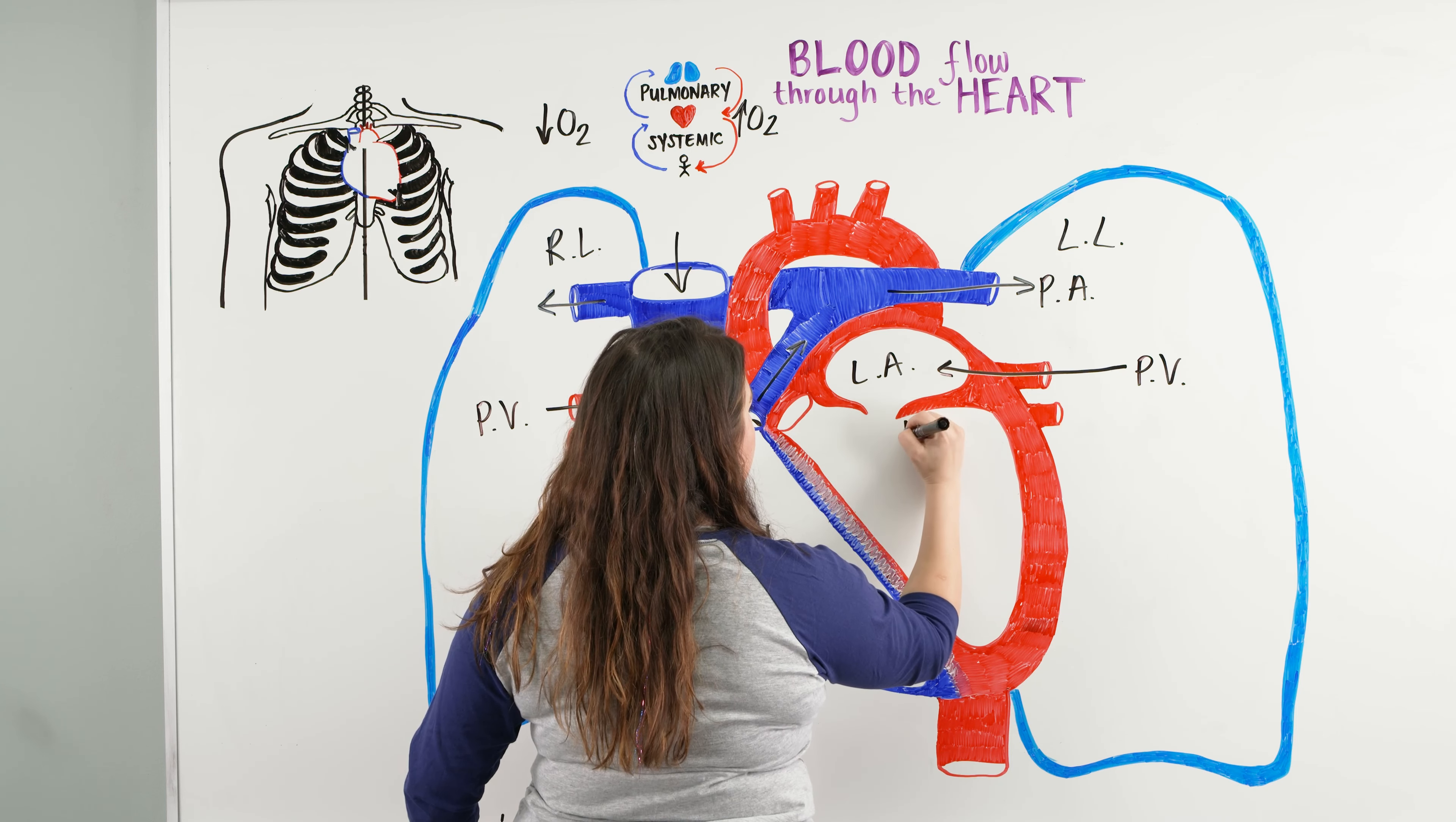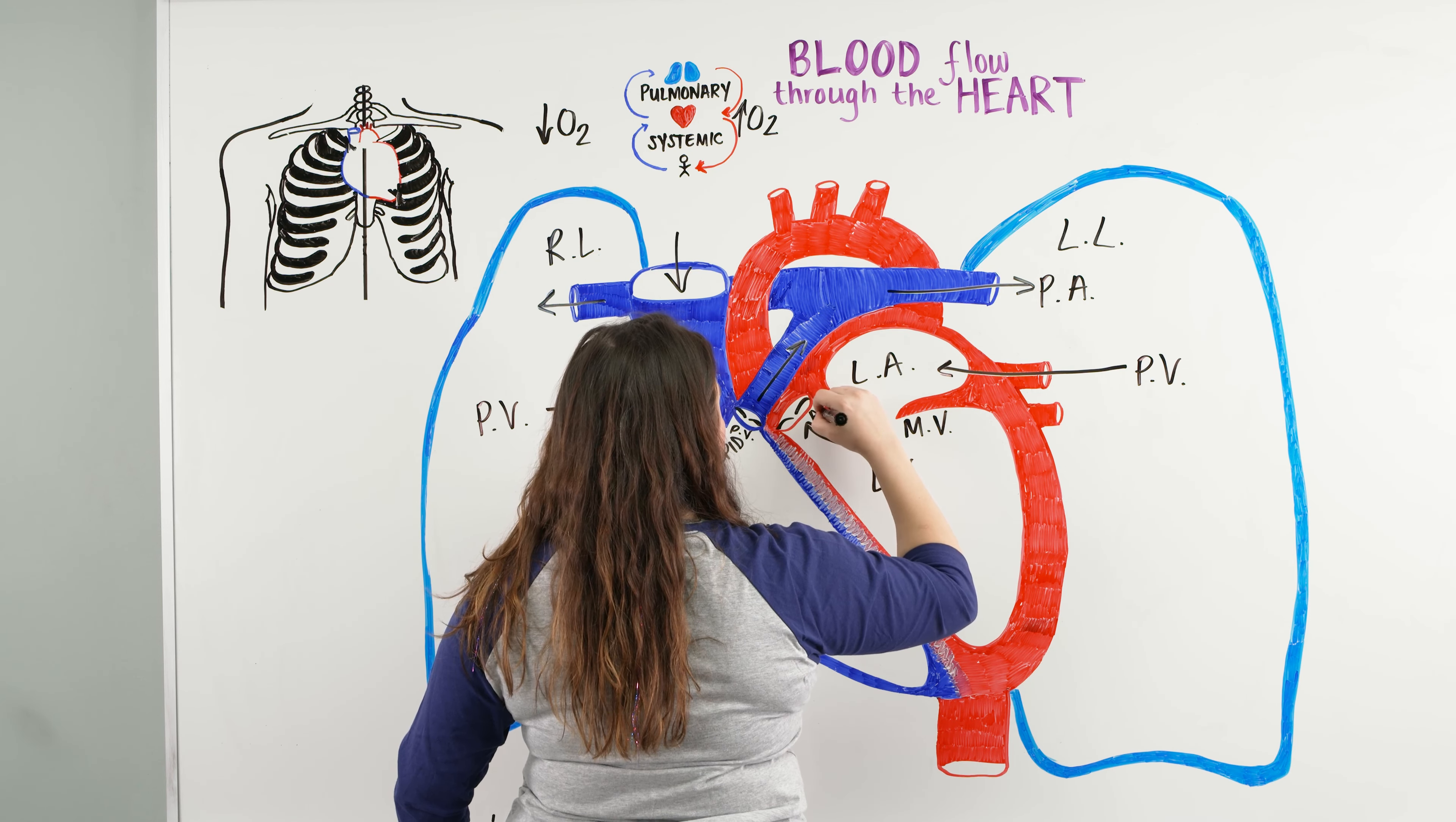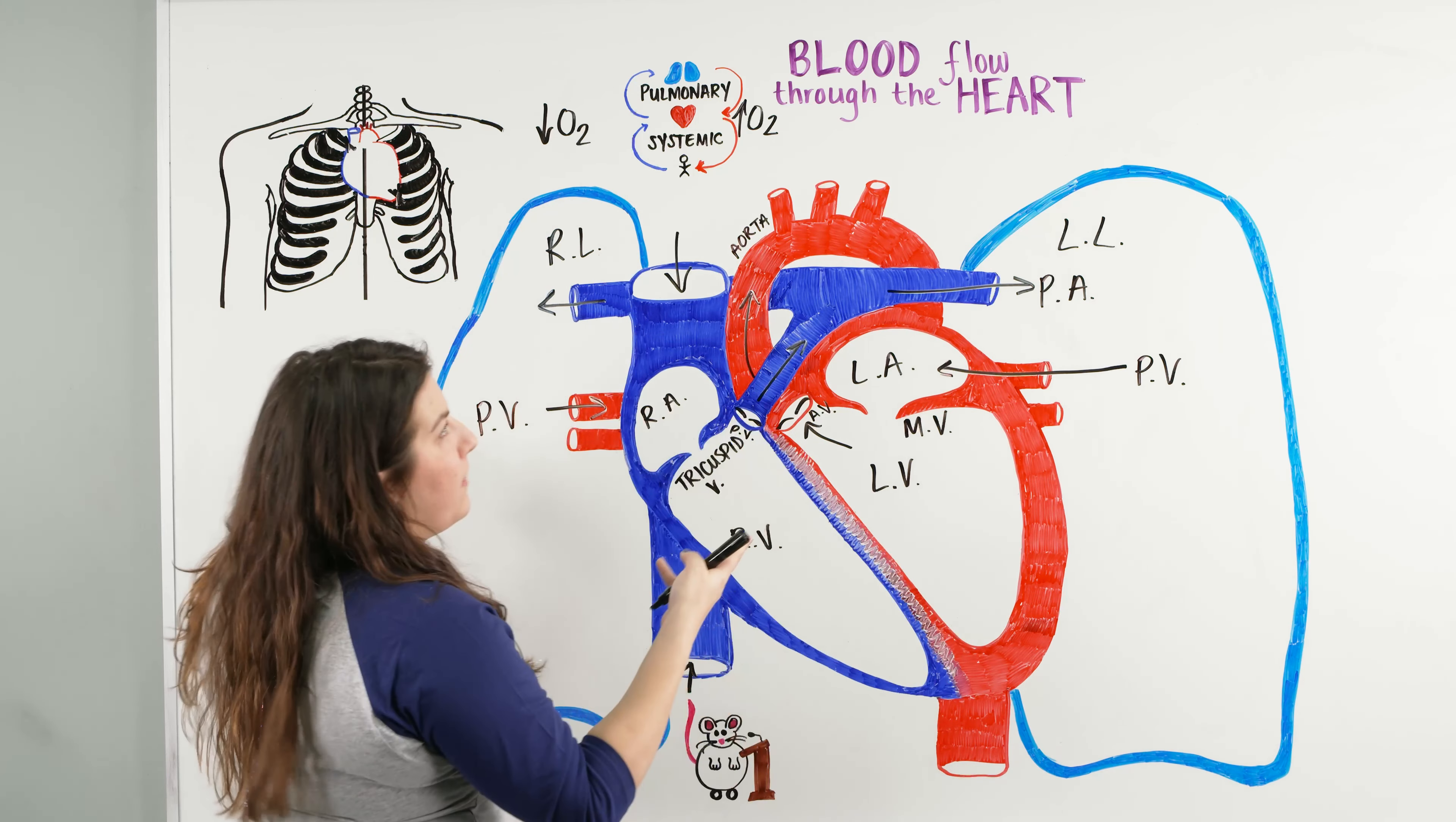From the left atrium, it goes through the, what's this valve right here, mitral valve, into the left ventricle, through the aortic valve, and up the aorta, and then down through the rest of the body, right? That is blood flow through the heart.